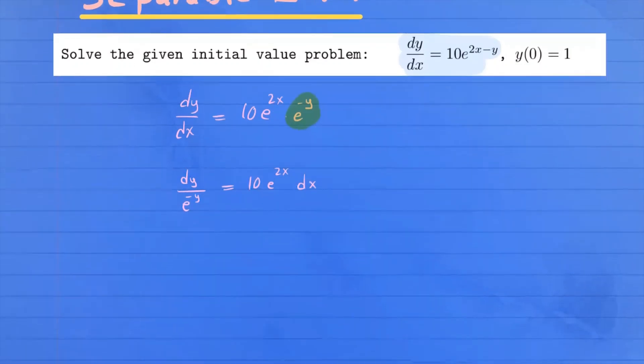You have dy divided by e^(-y) equals 10e^(2x)dx. On the left-hand side, we can rewrite e^(-y) on the denominator as e^y on the numerator, times dy equals 10e^(2x)dx. Now this is separated. You have a function of y here, a function of x here, and dx and dy with their corresponding functions.